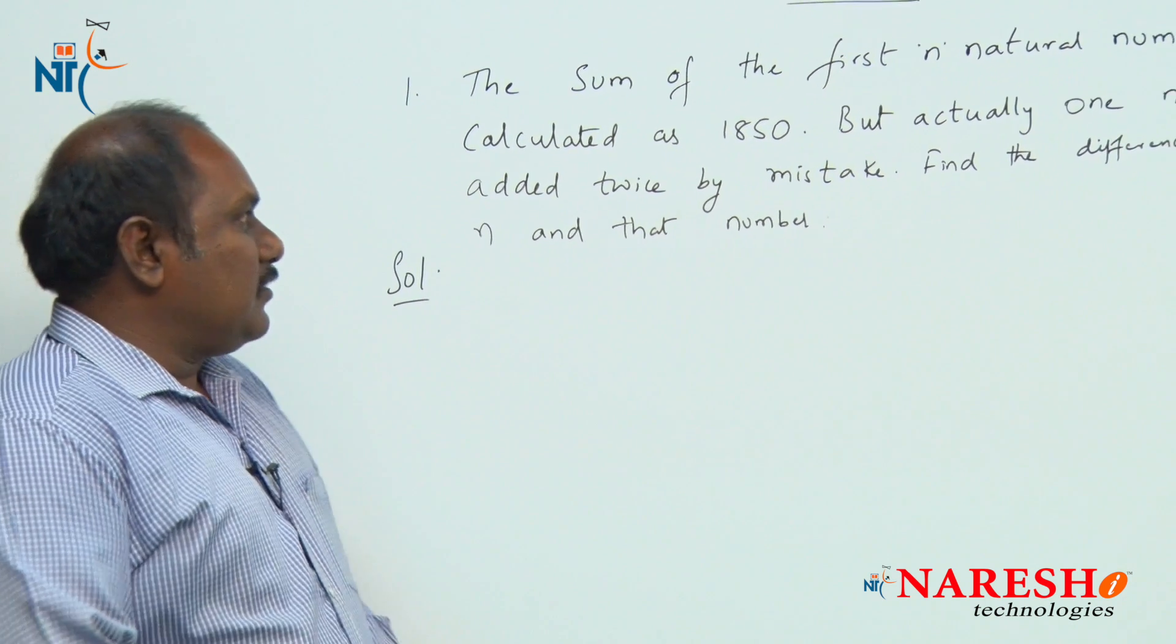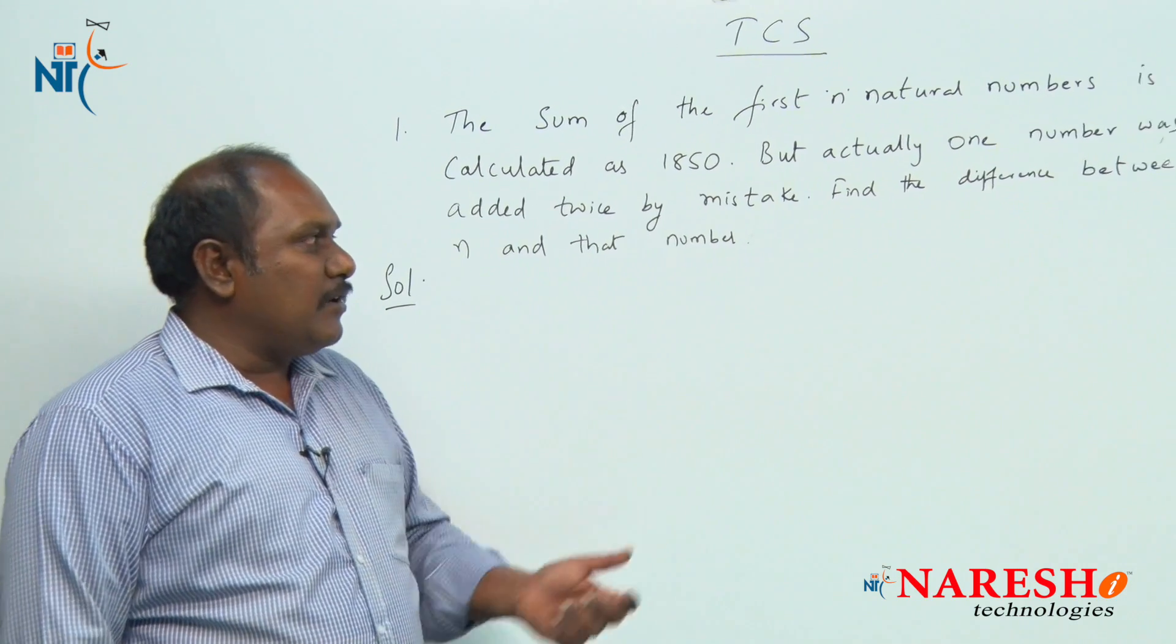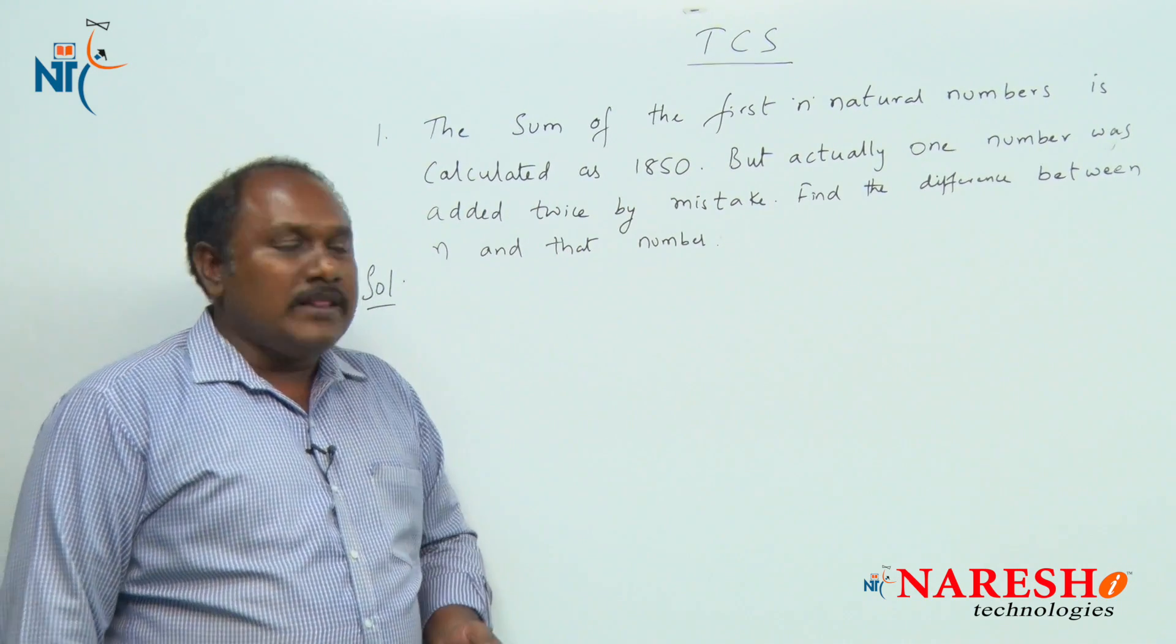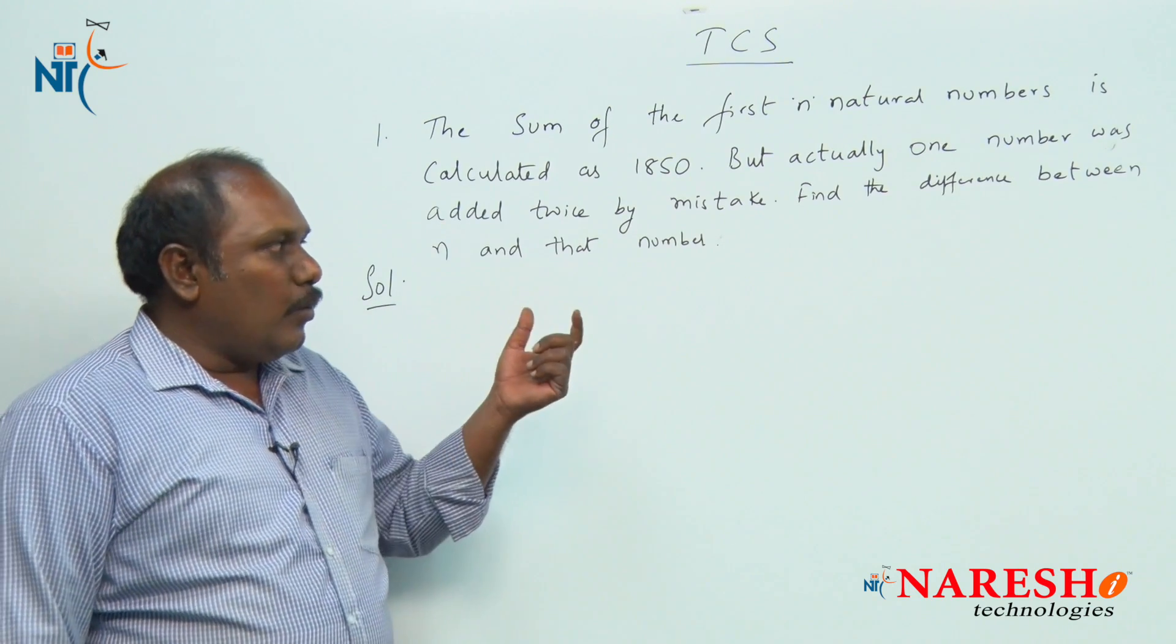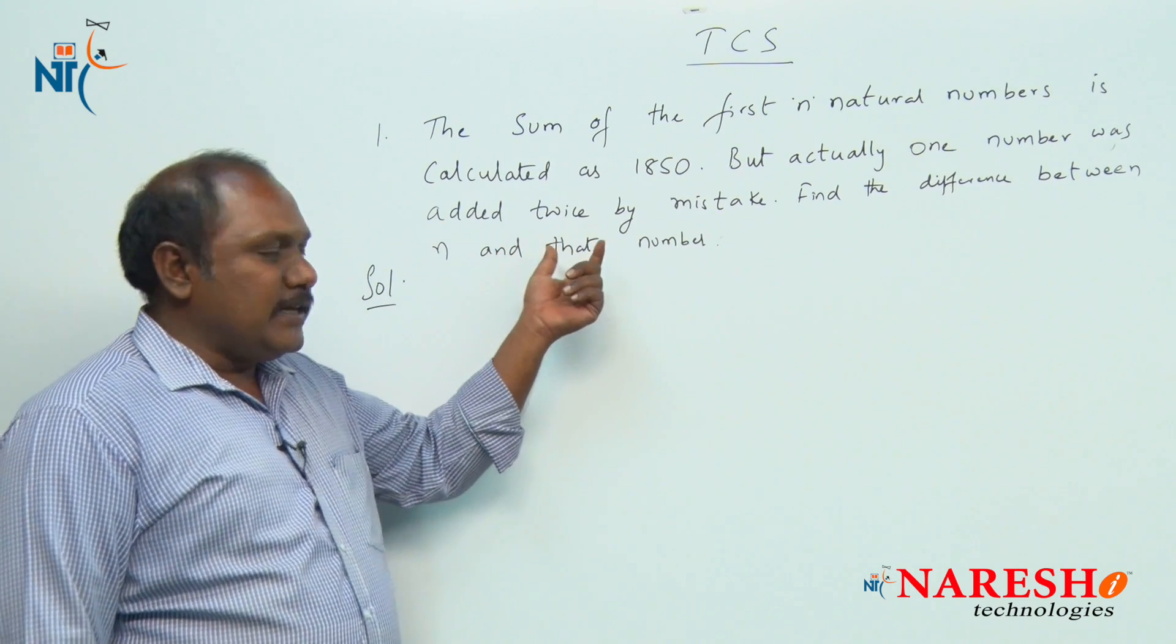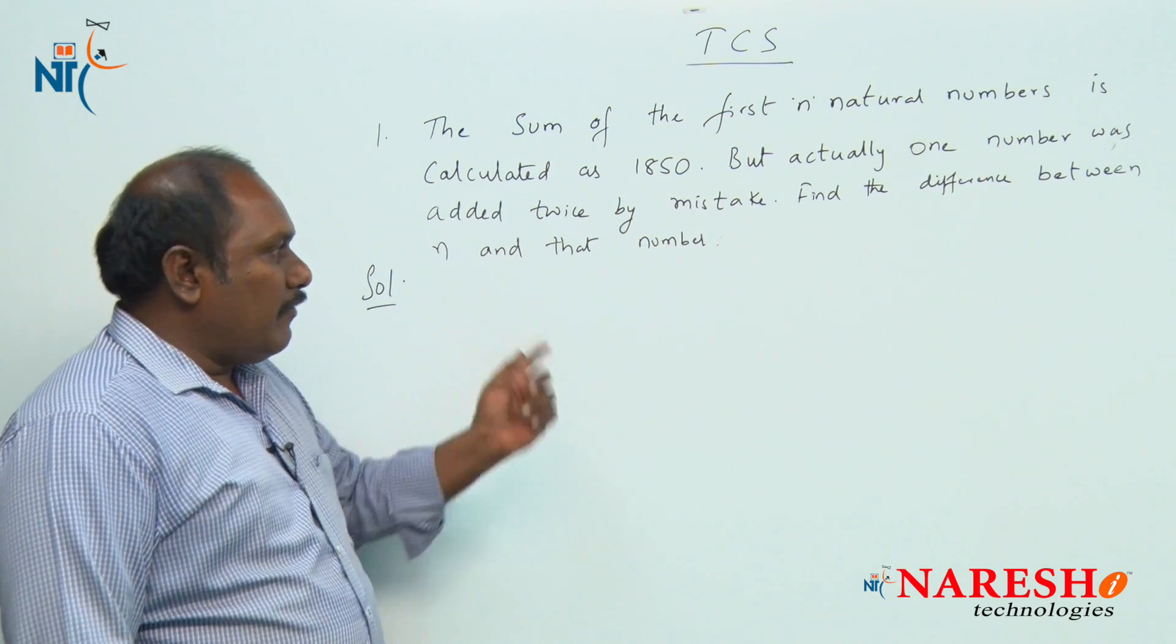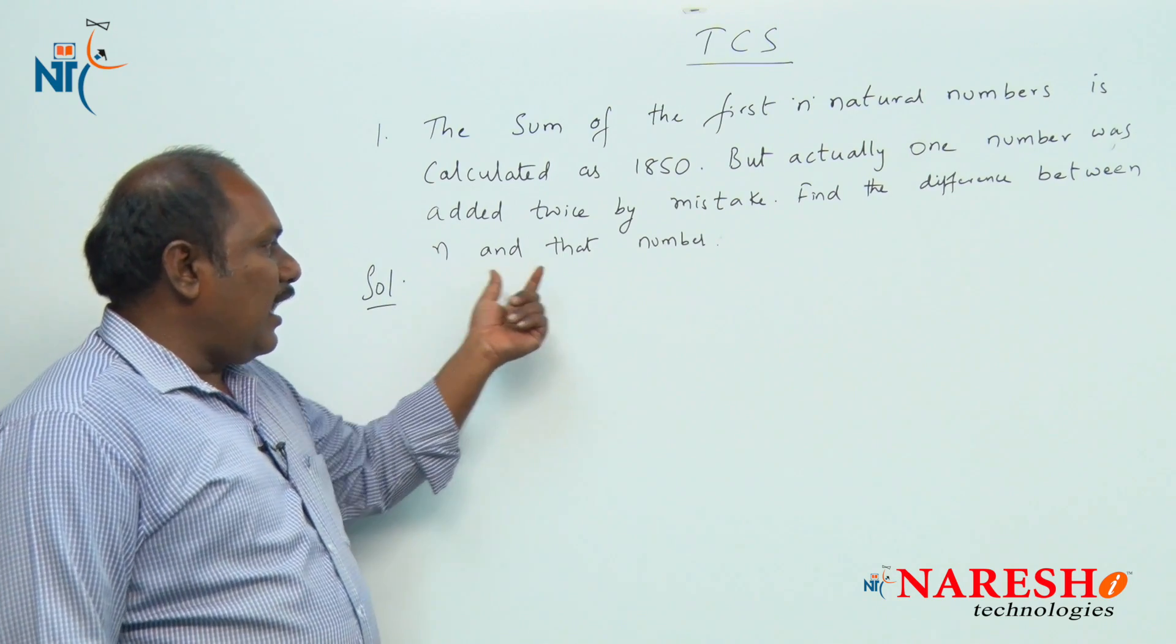The question: The sum of the first n natural numbers is calculated as 1850, but actually one number was added twice by mistake. Find the difference between n and that number.